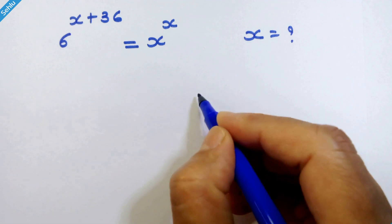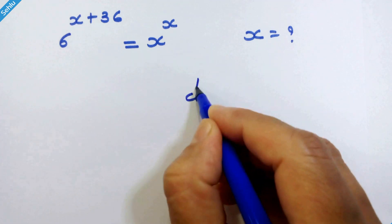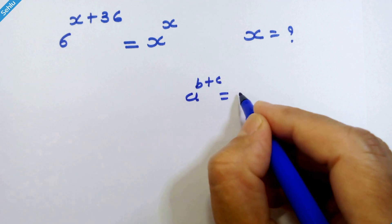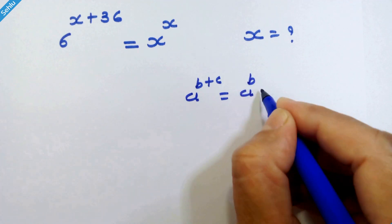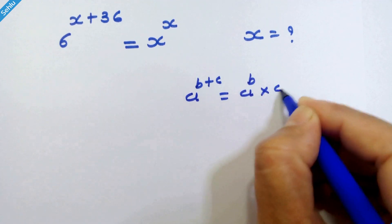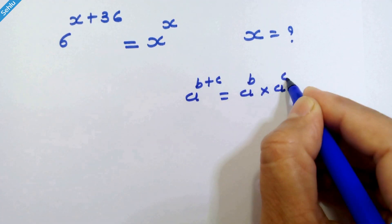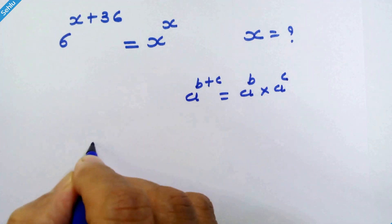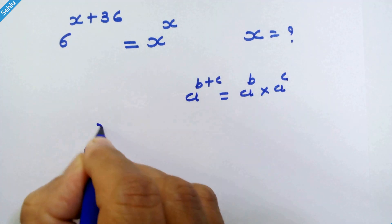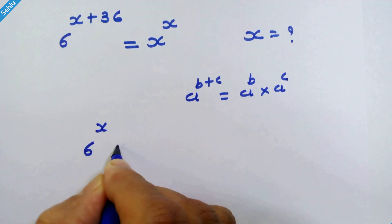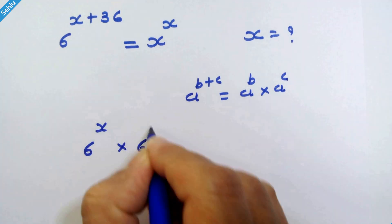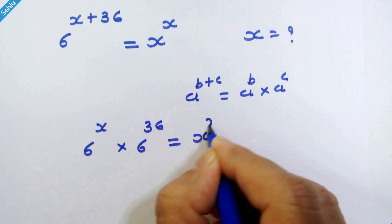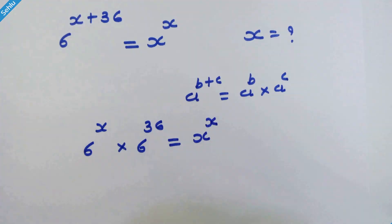Do you know this rule? If a raised to b plus c, then we can write a raised to b into a raised to c. Let's apply this rule here. So we have 6 raised to x into 6 raised to 36 is equal to x raised to x.